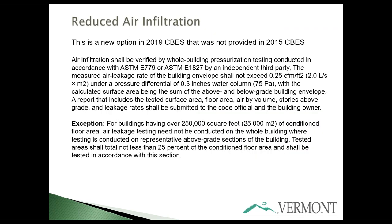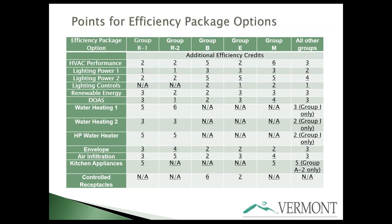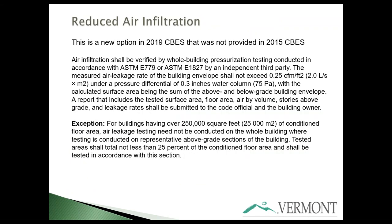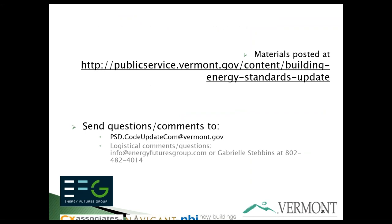The other envelope-related option design teams may pursue is reduced air infiltration. Instead of 0.3 CFM per square foot, if you achieve 0.25 CFM per square foot everything else being the same, you qualify for the extra points. For the R1 building class, enhanced envelope earns three points and reduced air infiltration also earns three; for R2, enhanced envelope earns four points and reduced air infiltration earns five.